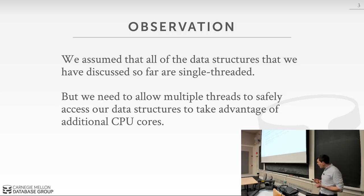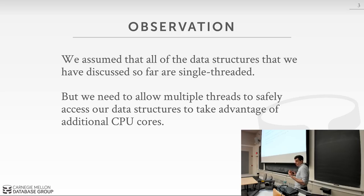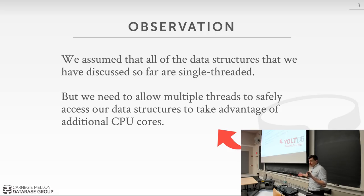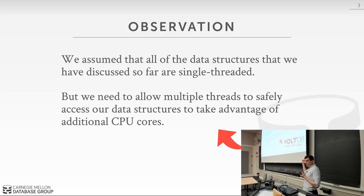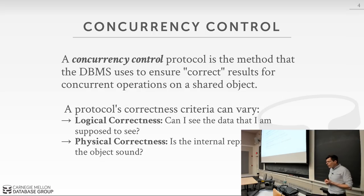As a spoiler: almost everything we're talking about today is used in almost every single database system. One notable exception is VoltDB — they only run single-threaded on a core, with multiple cores each running in single-threaded mode. This avoids all the overhead of index concurrency control and latching. They'll explain their approach at the end of the semester — it works well for OLTP workloads, not so great for OLAP.